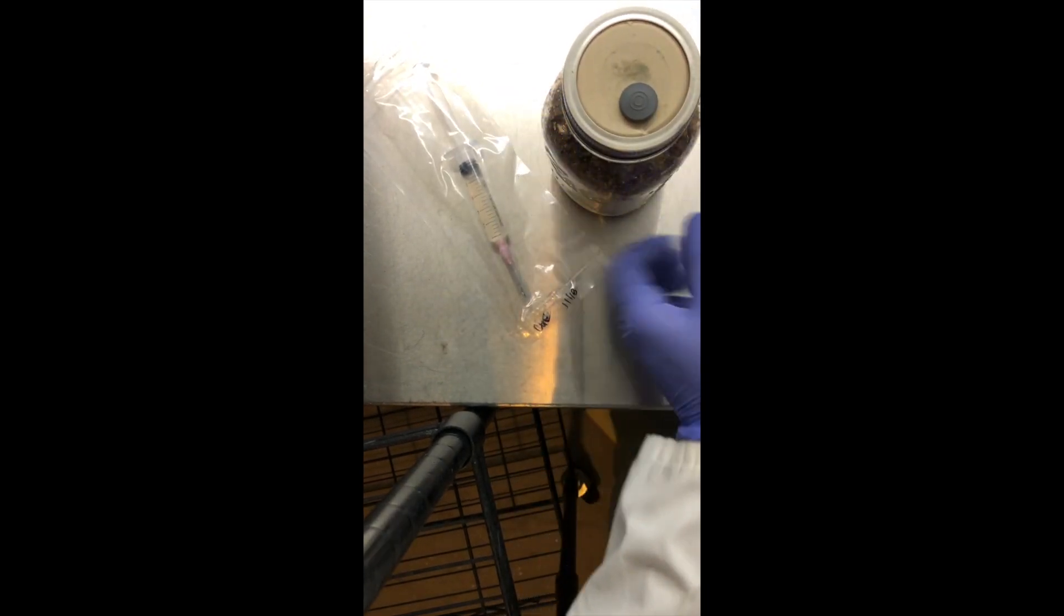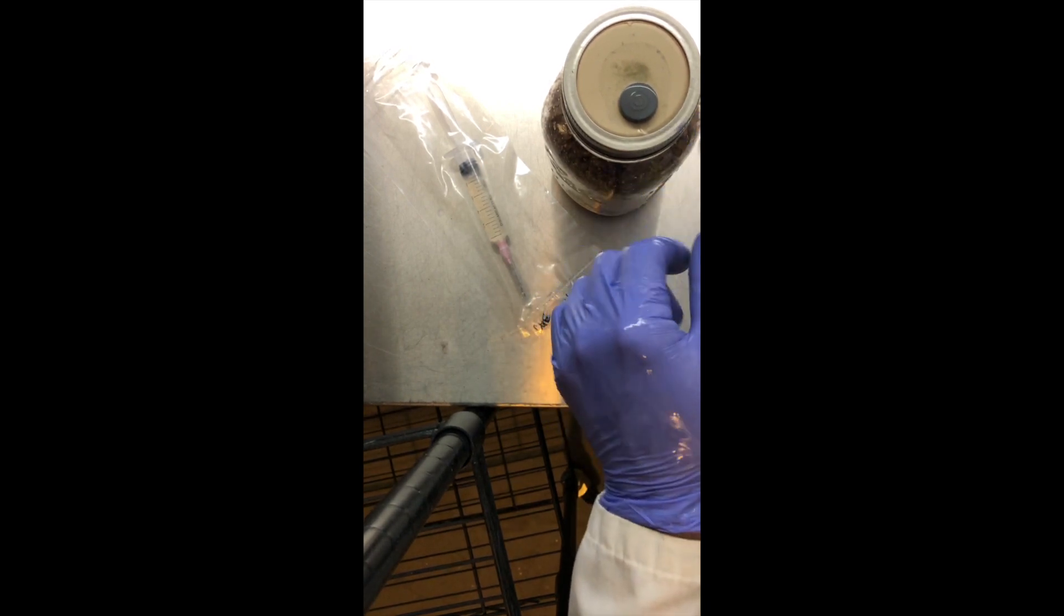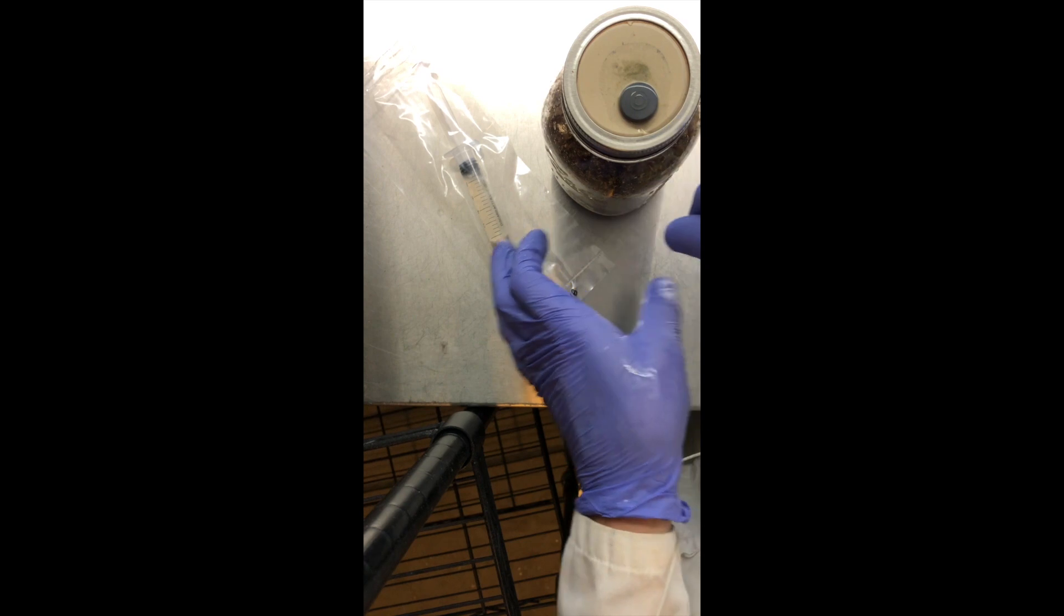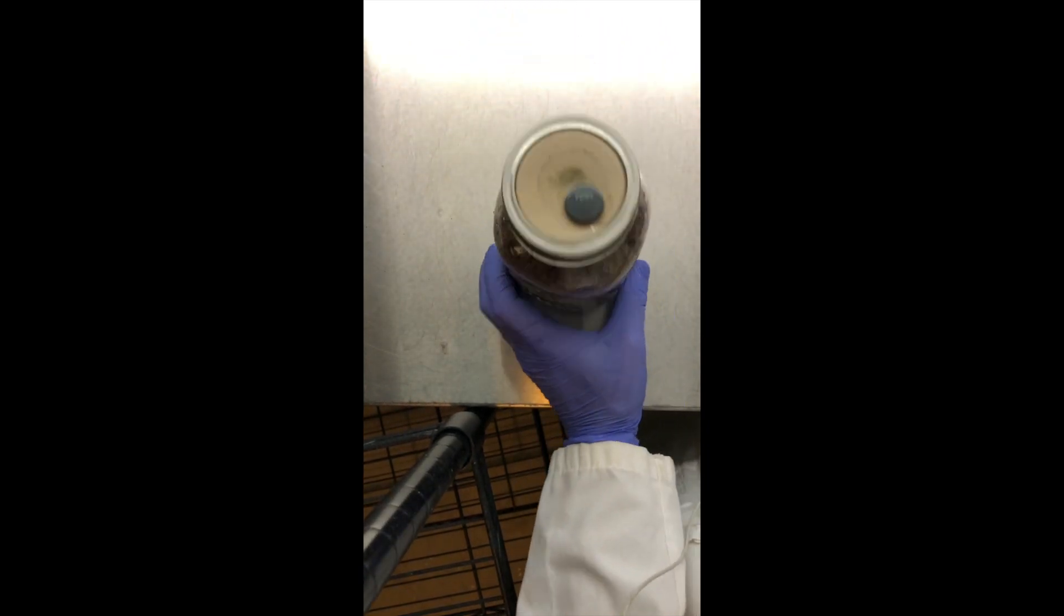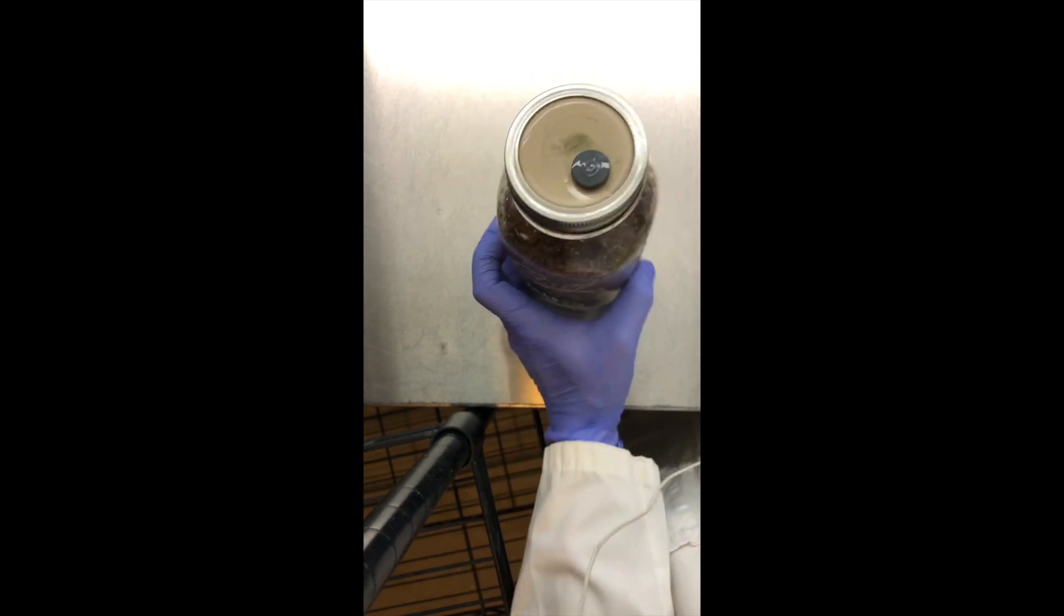For this injection port, if you did not have a laminar hood, you could always just spray with alcohol and let it dry, and that's going to help keep that needle sterile or aseptic as it's going into the culture.